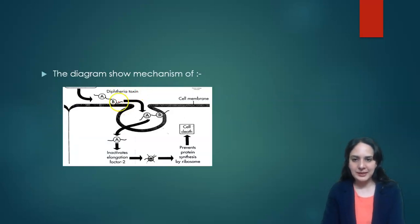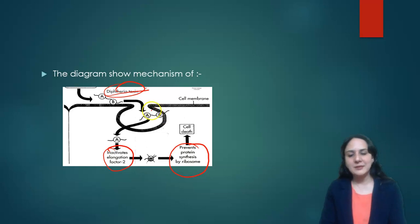Next, this diagram was given and asked: which toxin is acting on inactivation of elongation factor 2 which prevents protein synthesis? This was not given. So answer is diphtheria toxin. Diphtheria toxin when combines with receptor, it inactivates elongation factor 2 which prevents protein synthesis by ribosome.